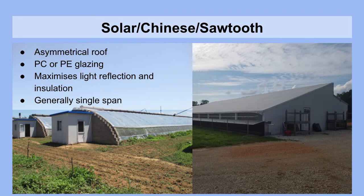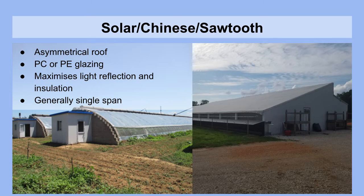Next we'll take a look at solar greenhouses, also known as Chinese style or sawtooth. These generally have an asymmetrical roof and are oriented from east to west instead of north to south. They can have polycarbonate or polyethylene glazing and they maximize light reflection off of the back north wall and insulation, because the east, west and north side can be materials that are not transparent and have much higher insulation. These are generally single span, and modular arrangements of these greenhouses will have spaces between modules, which can actually help for isolating different crops and environments, so that if you have an issue with pests and diseases, it will be confined to one greenhouse instead of the entire farm.